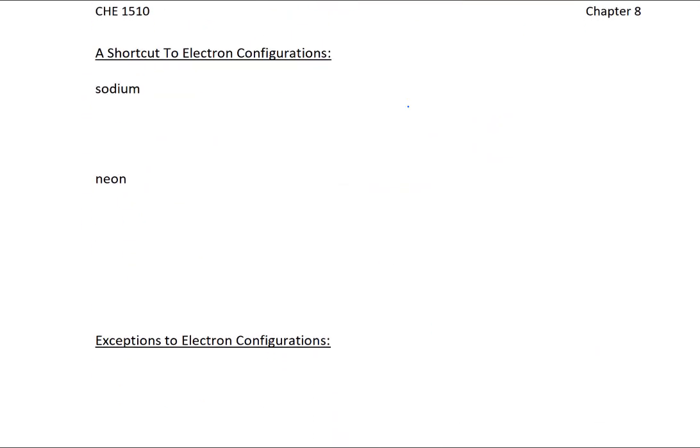So in our last little section, I want to talk about some shortcuts and some exceptions. So when you look at electron configurations, you're going to see a shortcut method, which is great, because you're going to get really bored of writing out 1s2, 2s2, blah, blah, blah, whatever, all the time.